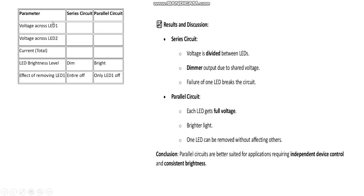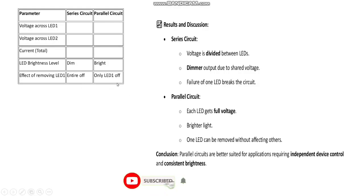This is the observation table. Measure the voltage across LED one and LED two for both series and parallel circuits and record it. In the series circuit you will get dim light; in the parallel circuit you will get brighter light. If you remove one LED in series, the entire circuit switches off, whereas in parallel it continues to work.